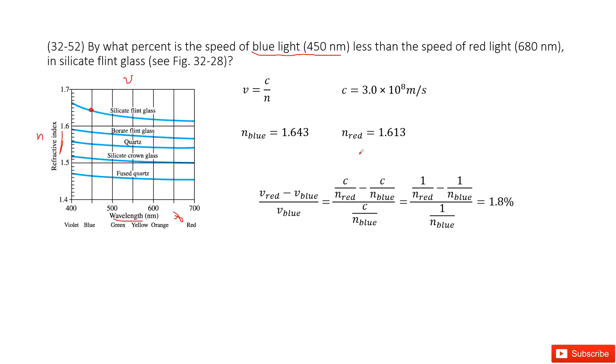And then we look at the red light. Red light is 680, around there. And then come to there. So we know it is 1.613.